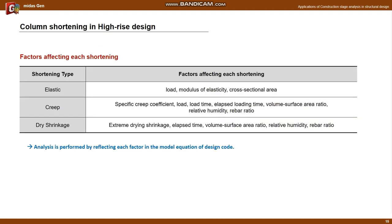What are the factors that influence each shortening? In the case of elastic shortening, it is the load, the modulus of elasticity, and the cross-sectional area. Creep is affected by specific creep factor, load, loading time, elapsed loading time, volume to surface area ratio, relative humidity, and rebar ratio. Drying shrinkage is affected by extreme drying shrinkage, elapsed time, volume surface area ratio, relative humidity, and rebar ratio.